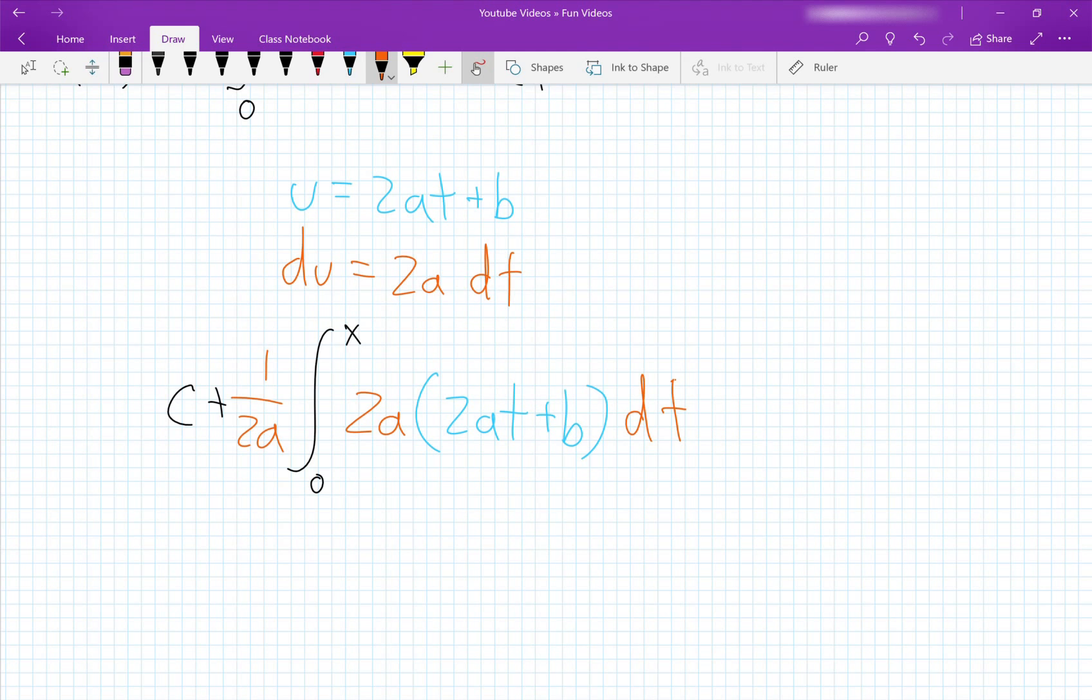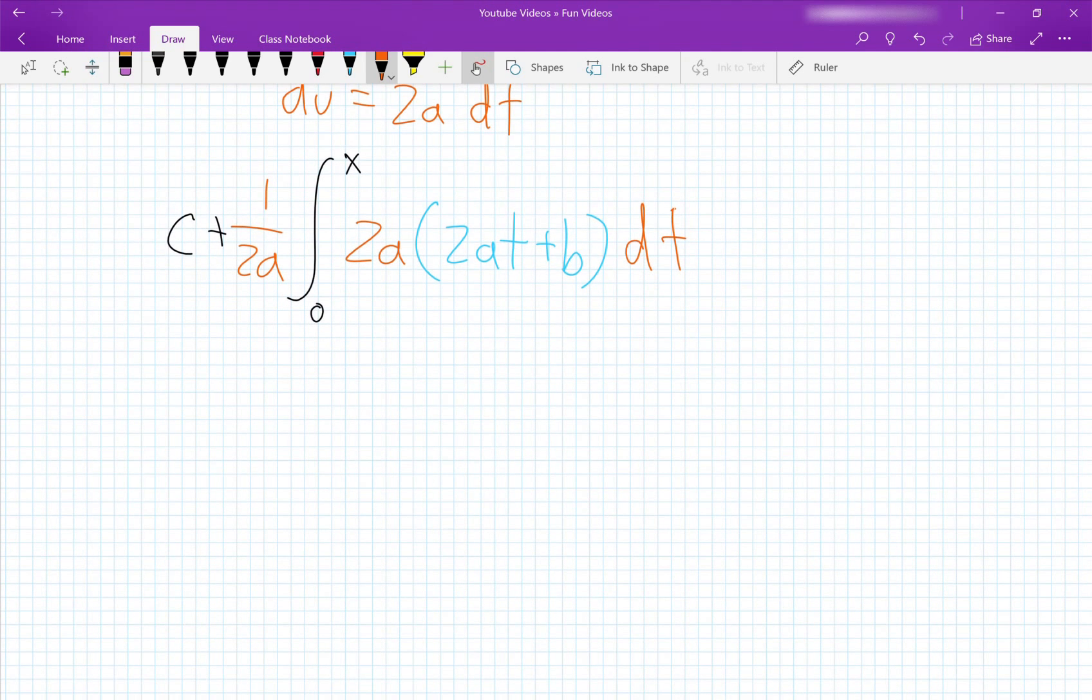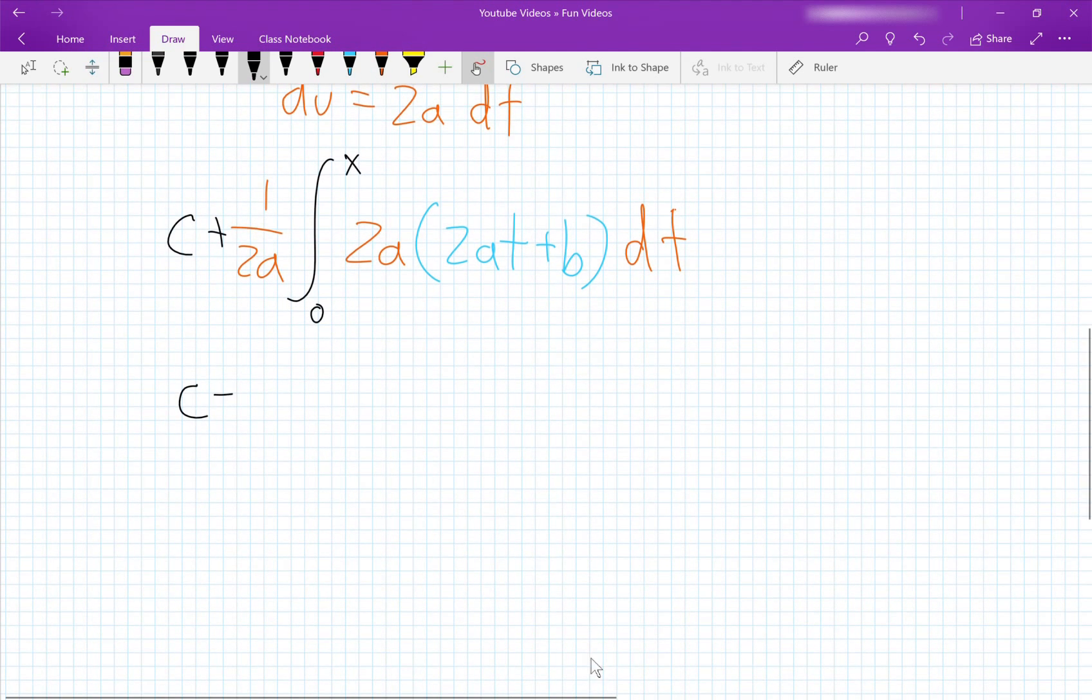So here we have c plus 1 over 2a, the definite integral from 0 to x of u.